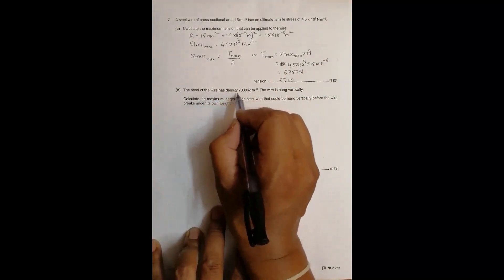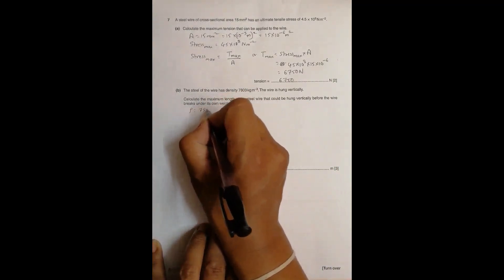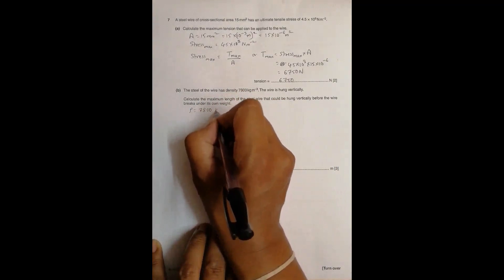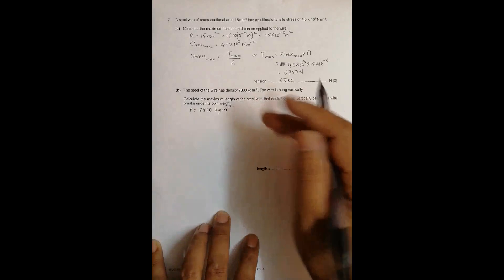Now the second question: we are given the steel wire has density 7800 kg per meter cube. So rho is equal to 7800 kg per meter cube. The wire is hung vertically, so it hangs vertically.